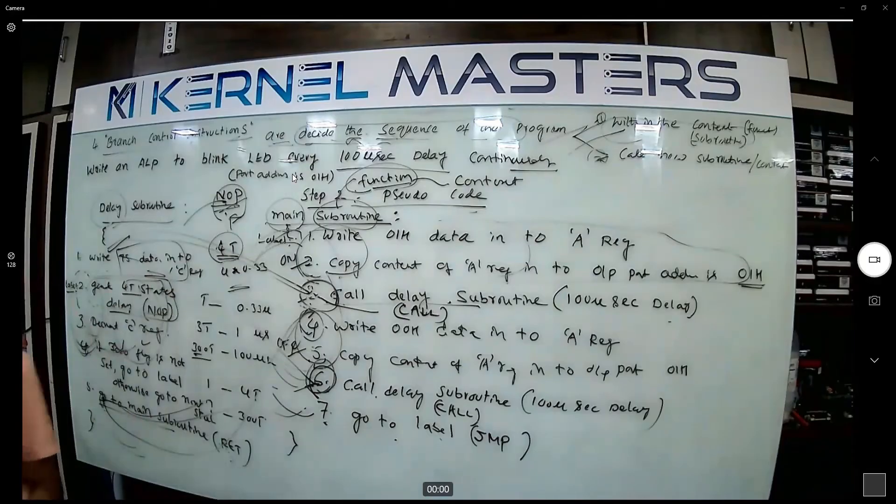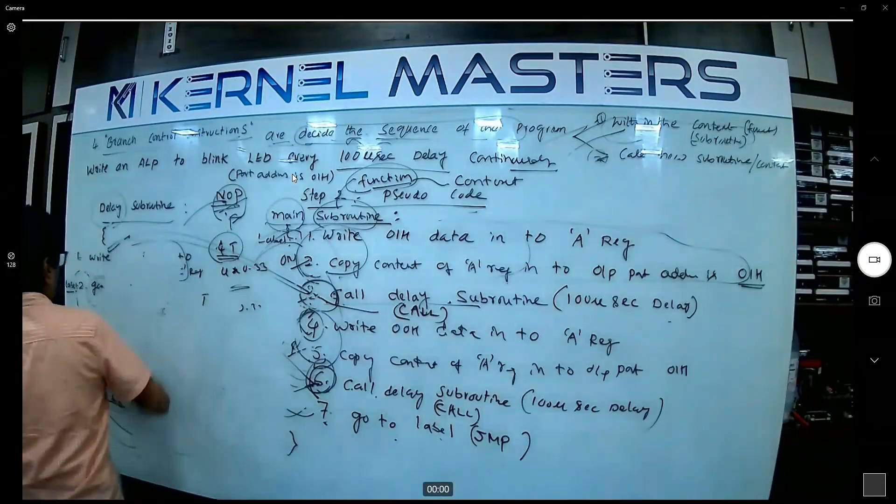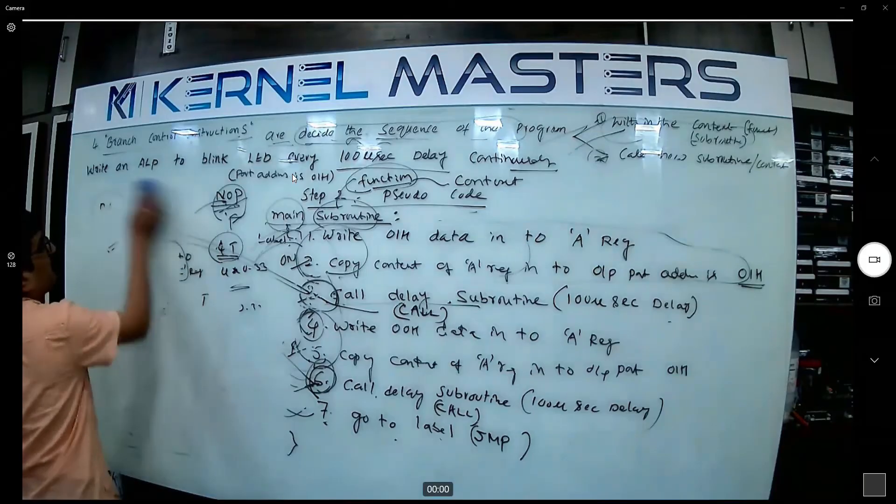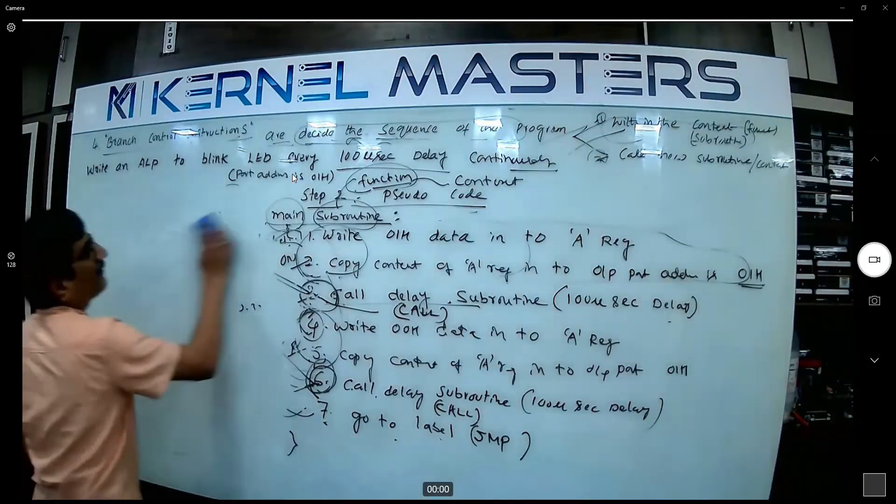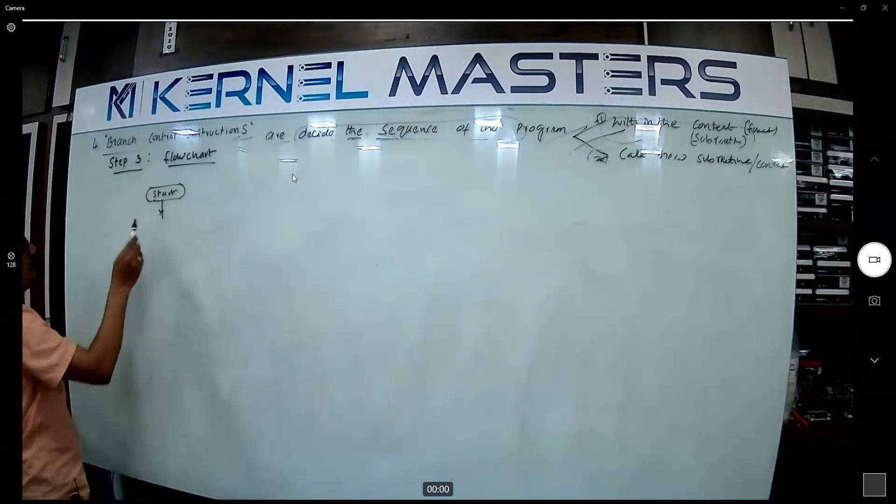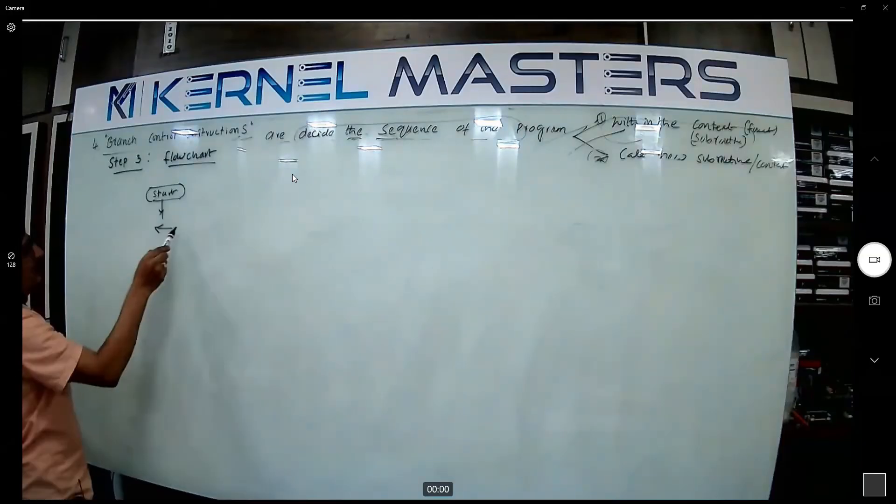What's the next step? Tell me the flowchart. So now pseudocode to convert the flowchart - is it not difficult? Understood, yes or no? Start. Okay, first you want to blink the LED. Write down 01, which register?